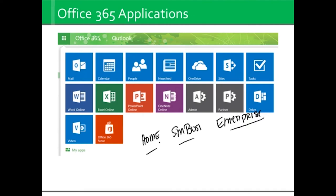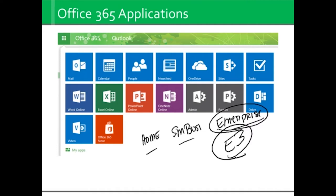What you do have to understand is the basis of this course is based off the enterprise version, and it is based on the E3 subscription. The E3 subscription is the Cadillac of Office 365 — it has everything. But there are versions that only have the software but no email, and also packages that have email but no additional software. So you really want to go to the site and find 'compare all plans.' Assuming everyone is on E3, we have email, we have calendar, we have people. And if you've ever used Outlook on a computer, it's the exact same thing.